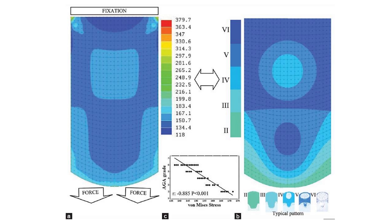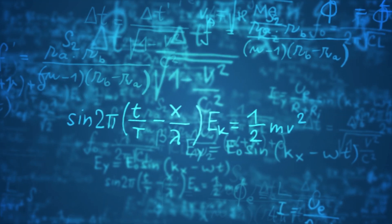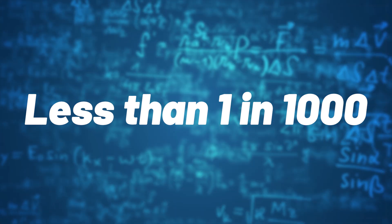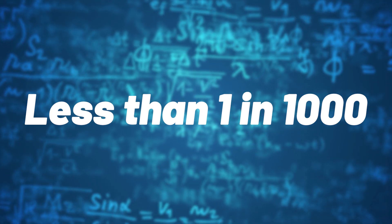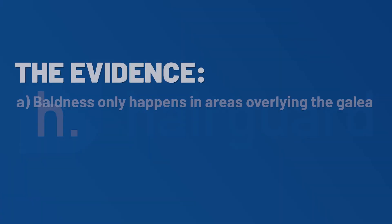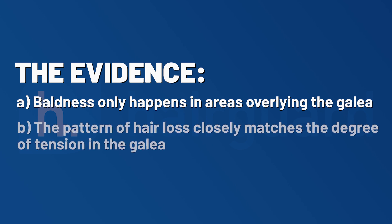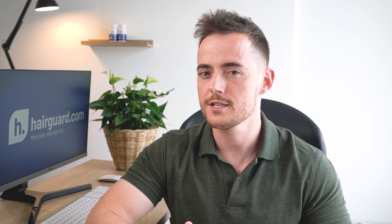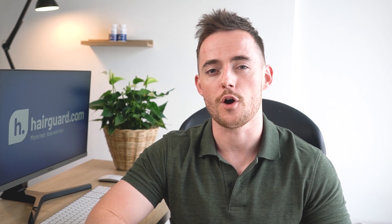We can see this better if we place this graphic side by side with the Hamilton-Norwood scale. The similarity is remarkable. You can actually do a statistical test to see what the chances are of this coincidence being down to chance, and there is a less than 1 in 1000 probability that this is down to chance. So now we essentially have two smoking guns: A — baldness only happens in areas overlying the galea; B — the pattern of hair loss closely matches the degree of tension in the galea. The areas with the highest tension are the first to go, followed by those with intermediate levels of tension, and finally those with the least tension. The chances of this being down to mere chance are vanishingly small.